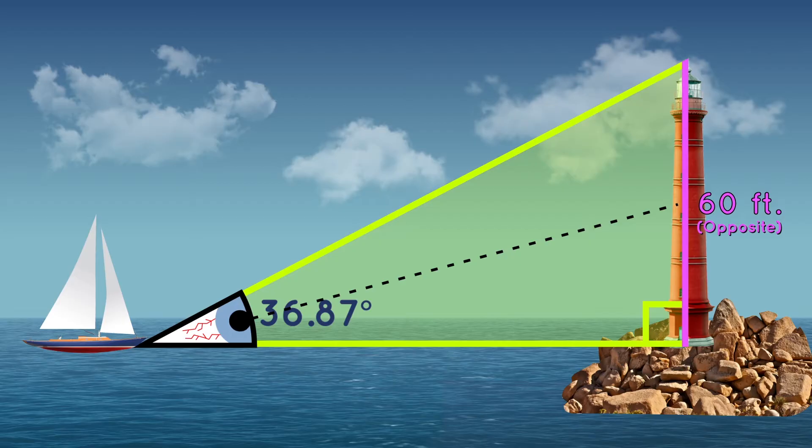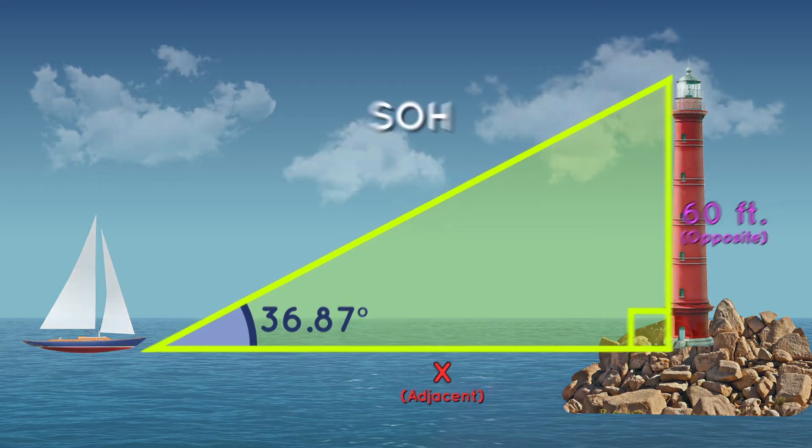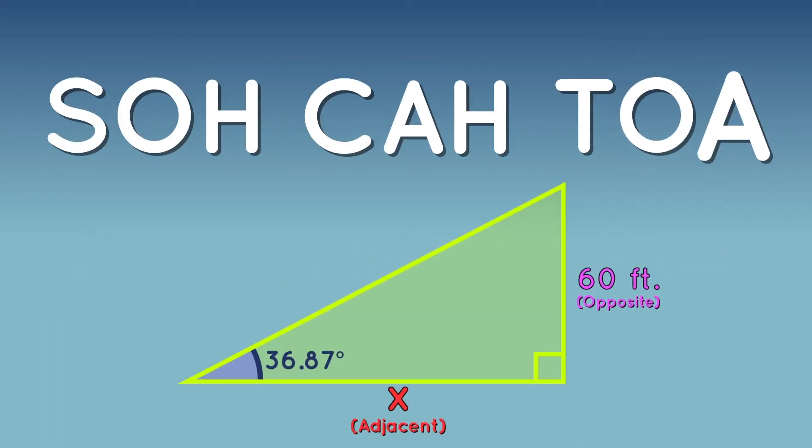Now what are we looking for? We want to know how far our boat is. That's this side here, the adjacent side. Now let's look at our functions to see how we can use this information. So, SOH CAH TOA. We have the opposite side and the adjacent side. This means we can use tangent.